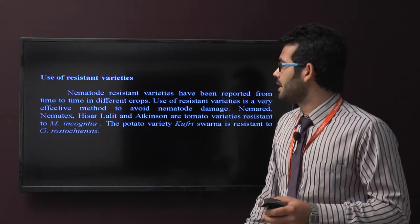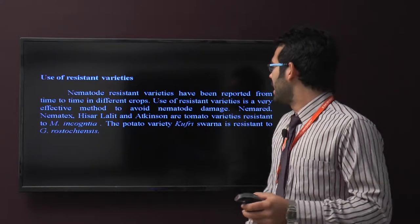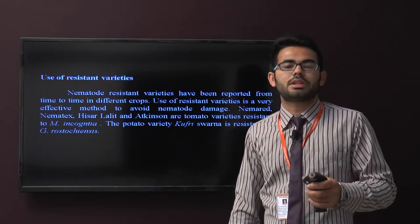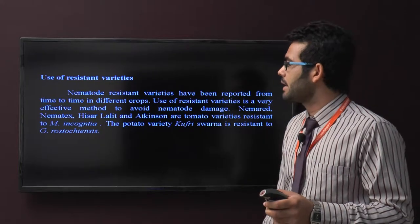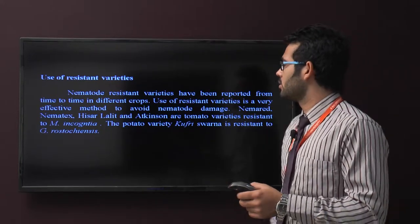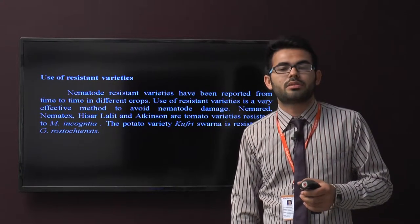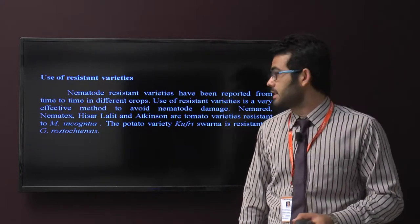Like Hisar Lalit and Arkasshan are different varieties of tomato which are resistant to Meloidogyne incognita. In potato, the variety Kufri Swarna is resistant to Globodera rostochiensis.